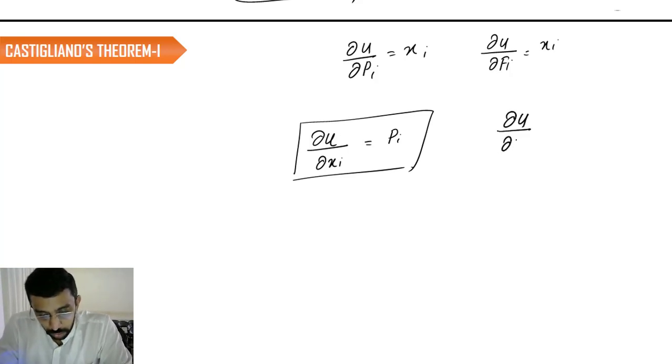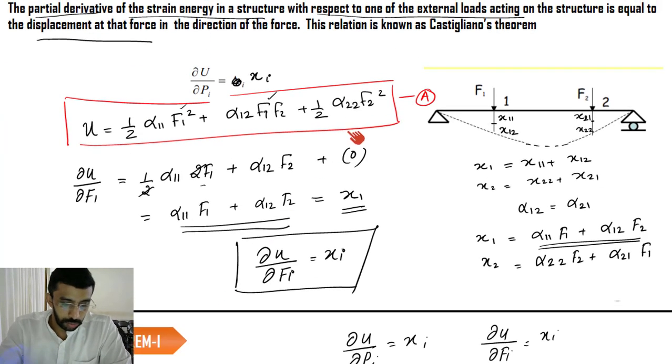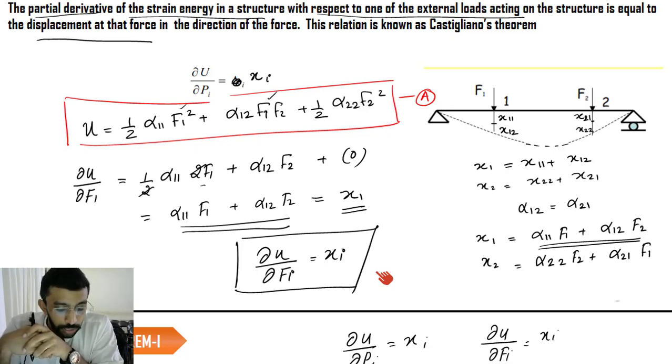If I differentiate dU by dX1, it is going to give you F1, or if you differentiate dU by dX2, we are going to get F2. Generally, we use this equation dU by dF is going to give you X to find out the deflection, because we will be focusing on that area and we have to solve some questions using Castigliano's theorem 1.